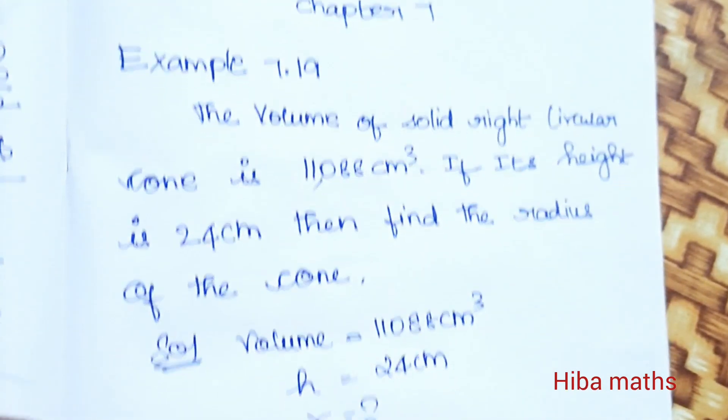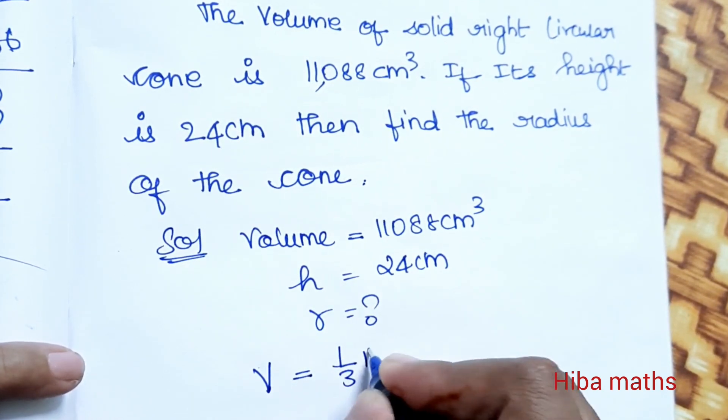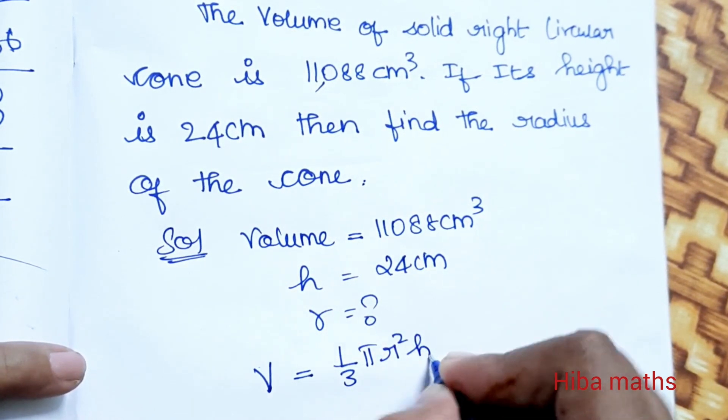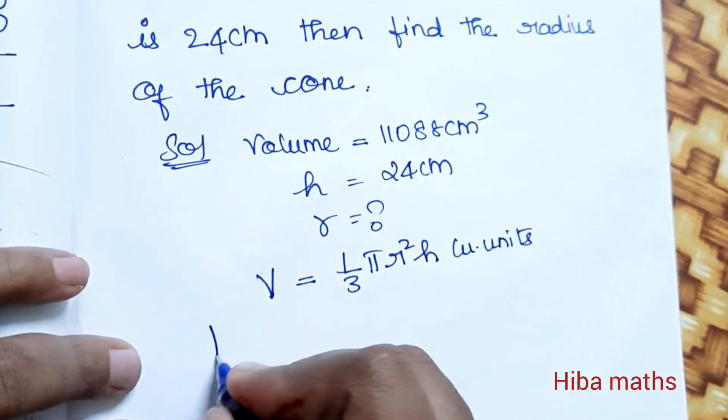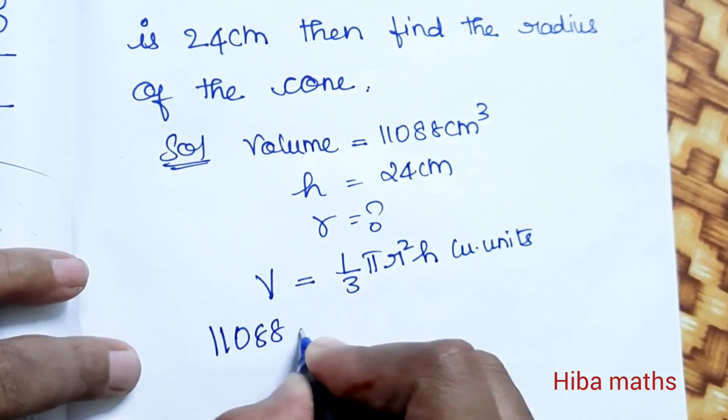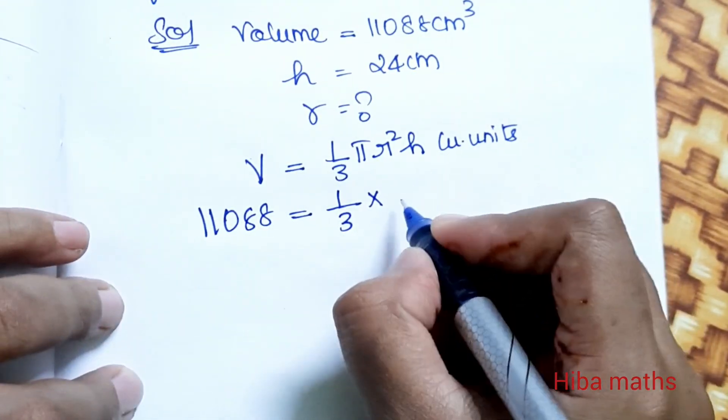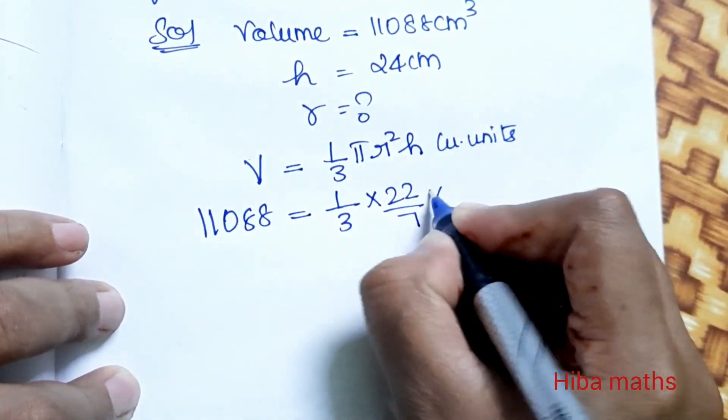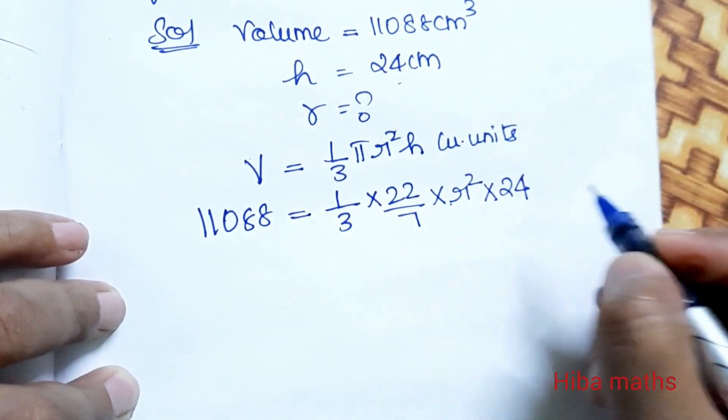The formula for volume is V = 1/3 πr²h cubic units. Substituting the values: 11,088 = 1/3 × 22/7 × r² × 24. Now, that is the height value, 24.